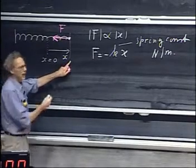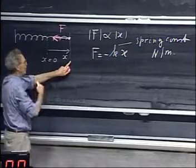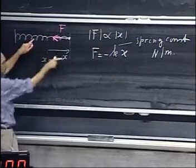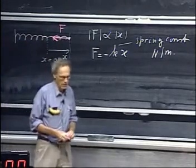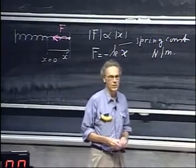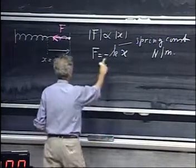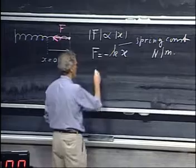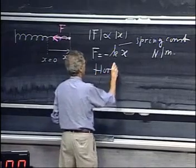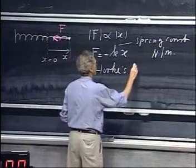So the minus sign takes care of the direction. When x is positive, then the force is in the negative direction. When x is negative, the force is in the positive direction. It is a restoring force. Whenever this linear relation between F and x holds, that is referred to as Hooke's Law.